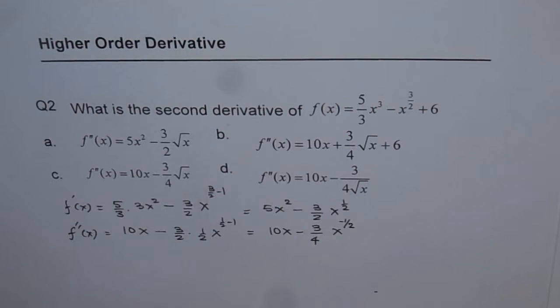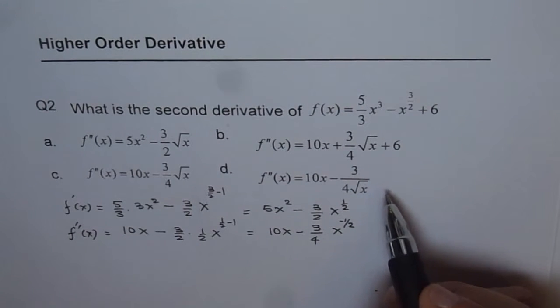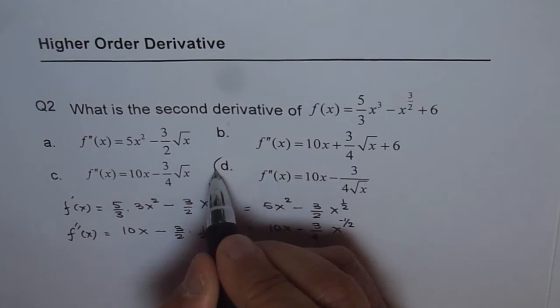From the results we can find that D is the right option, so we can circle D.